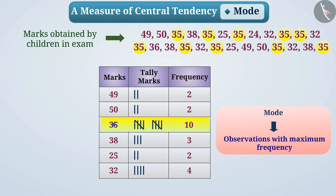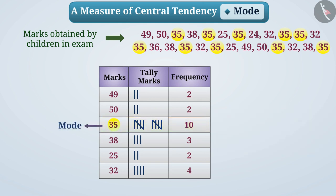Here, 35 has appeared most often — 10 times — so it is the mode. Mode 35 tells us that the maximum number of children scored 35 marks.